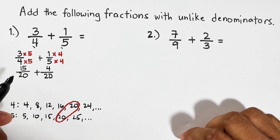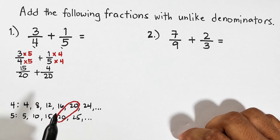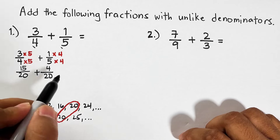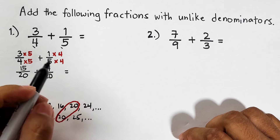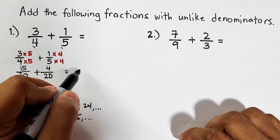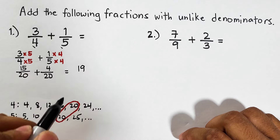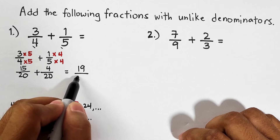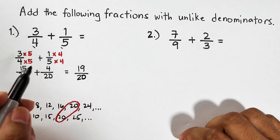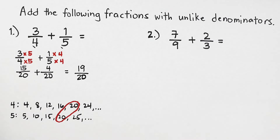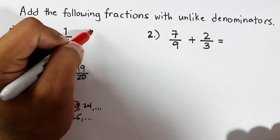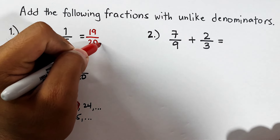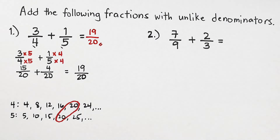Now it's easier to add the fractions since we have the same denominator. Fifteen plus four equals nineteen, and we copy the denominator which is twenty. So the final answer for this item is nineteen over twenty.